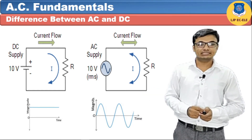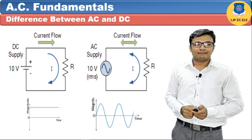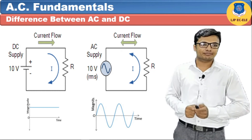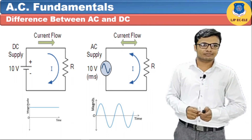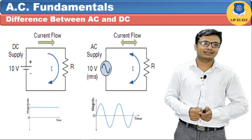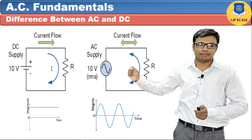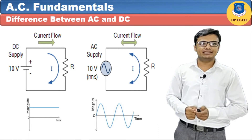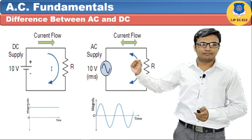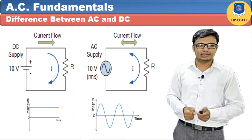The first difference is polarity: DC supply has polarity indicated by positive and negative signs, whereas AC supply does not have any polarity. Second difference is direction: DC supply has unidirectional current, whereas AC supply has bi-directional current. Third difference is magnitude: DC voltage remains constant with time, whereas AC voltage continuously varies with time. Fourth difference is frequency: DC supply does not have any frequency, whereas AC supply has a frequency of 50 or 60 Hertz.